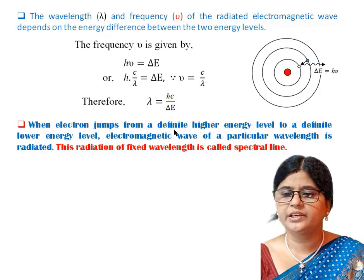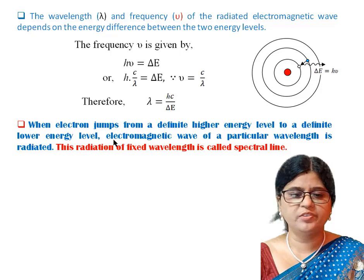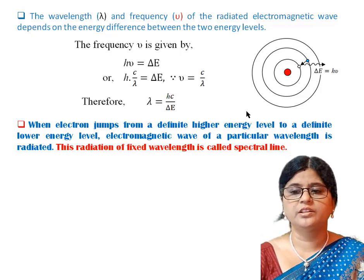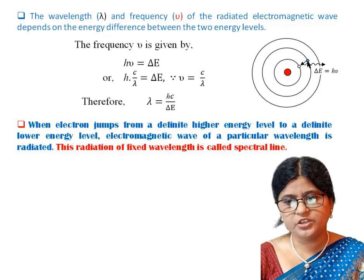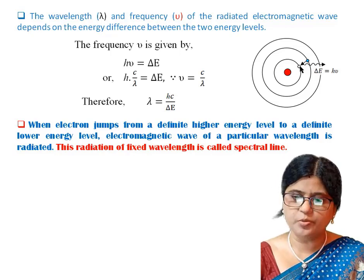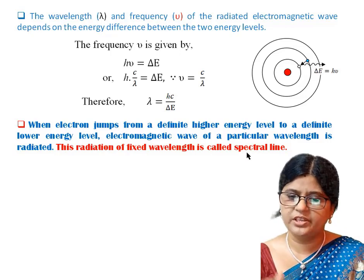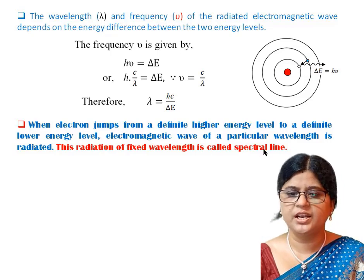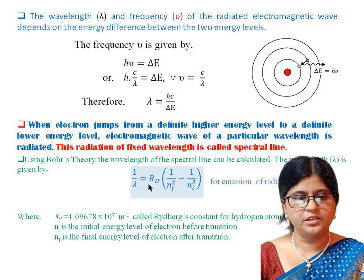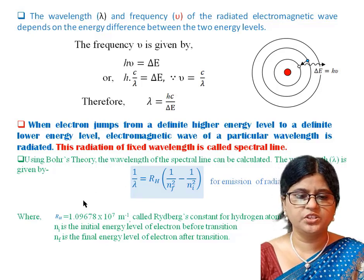When an electron jumps from a definite higher energy level to a definite lower energy level, an electromagnetic wave of a particular wavelength is radiated. This radiation of fixed wavelength is called a spectral line. Using this equation, the wavelength of the spectral line can be calculated — this follows from Bohr's theory.